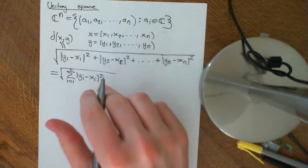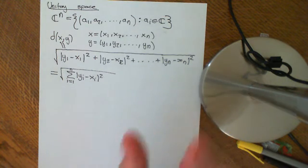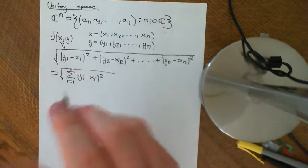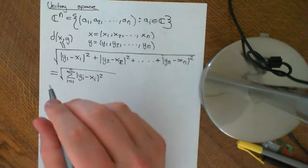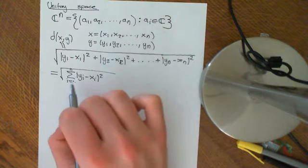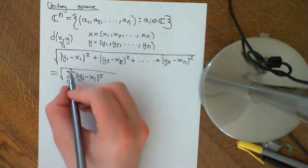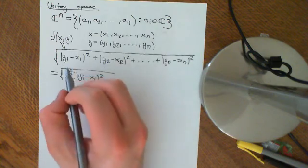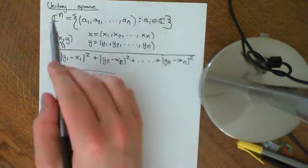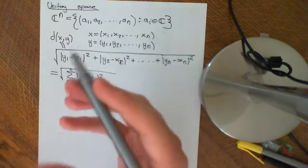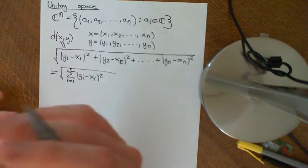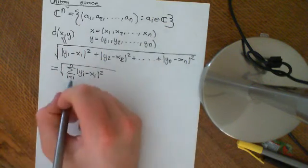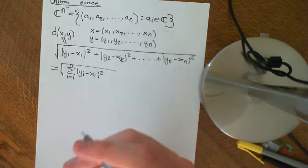We won't show that this obeys the triangle inequality in this video — we will prove it in later videos. At the moment we're just going to look at the first three axioms. For the case N = 1, this metric formula reduces to the modulus of Y1 minus X1, which is just the complex plane case, and we know that obeys the triangle inequality from intuition. That gives some inkling that this formula will obey the triangle inequality, but we will prove it later.